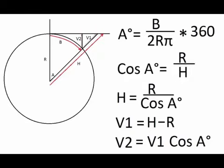Looking at the diagram: r is the radius of the earth; b is the length of pipe along the curvature of the earth; a is the angle from the start point where the line from the center of the earth intersects with the end of the pipe; v1 is the distance from the horizontal line from the start of the pipe to the earth at 90 degrees; v2 is the height that the pipe will need to bend down in order to get it parallel to the earth at the end of the pipe; h is the length from the center of the earth to the horizontal of the start point of the line intersecting at the end of the pipe.